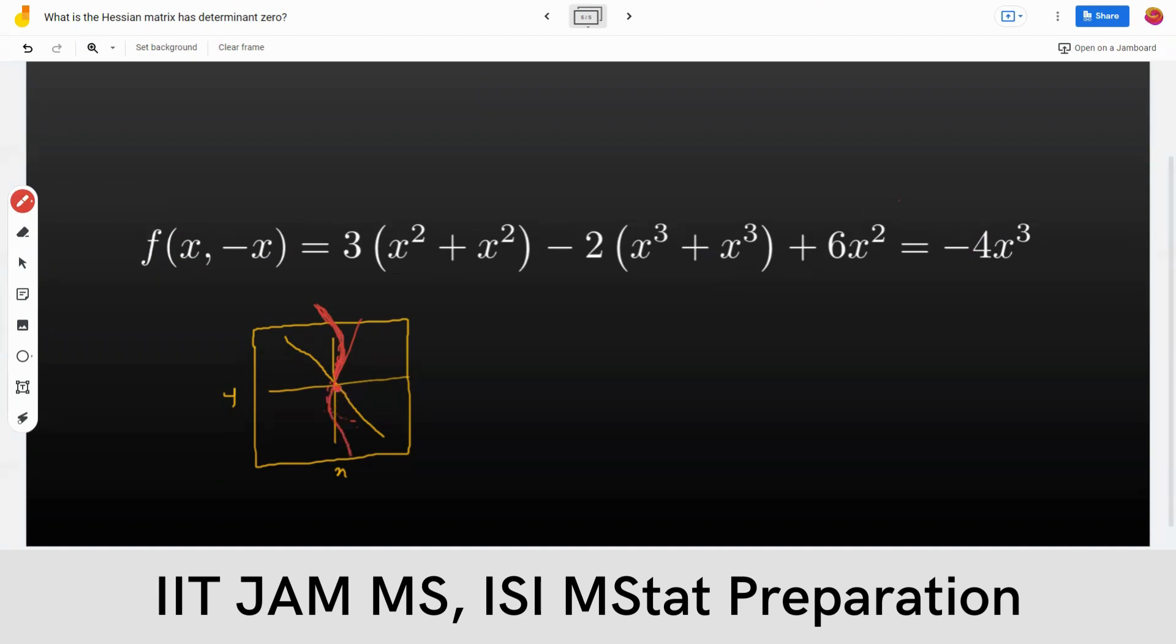So therefore, the idea is that for an arbitrary interval around (0, 0), whatever interval you take around (0, 0), you get both positive values and negative values because of the minus 4x cubed.